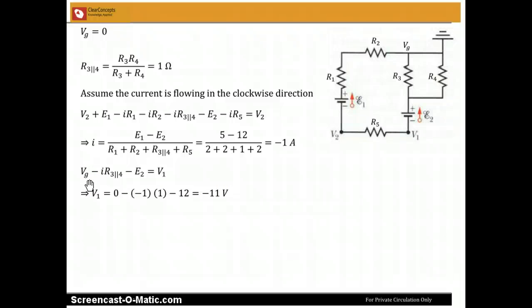And so plugging in the values, remember it is the ground potential, so that is 0 minus IR3 parallel 4. But I is minus 1, R3 parallel 4 is 1, and then minus E2 which will give me minus 11 volts.